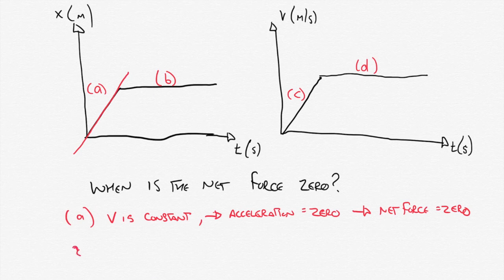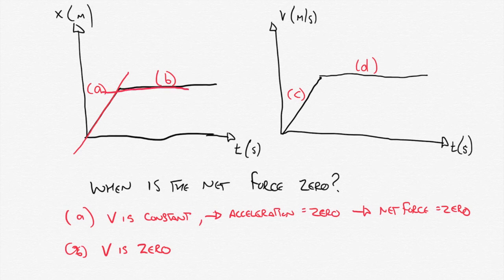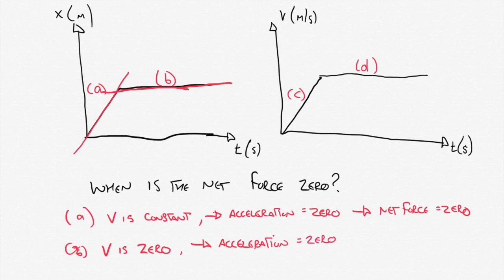So what about region B? In region B, the displacement is constant. The object is at a particular point in space and that location is not changing. So if the displacement isn't changing, the object must be stationary, which means the velocity is zero. If the object isn't moving, then its velocity also isn't changing across region B. So the velocity is not changing, which tells us the acceleration has to be zero, and therefore the net force equals zero.